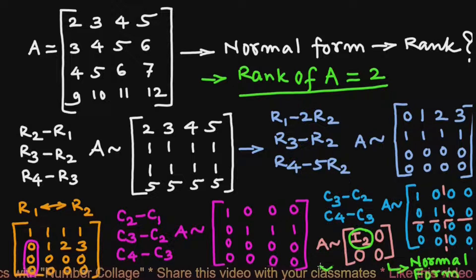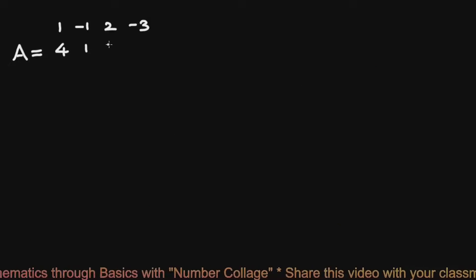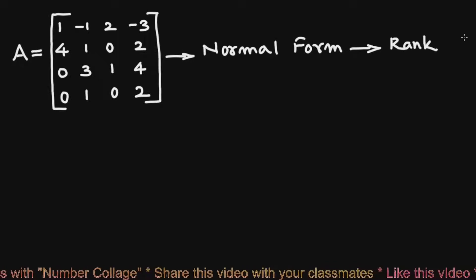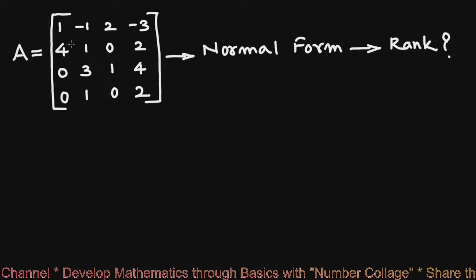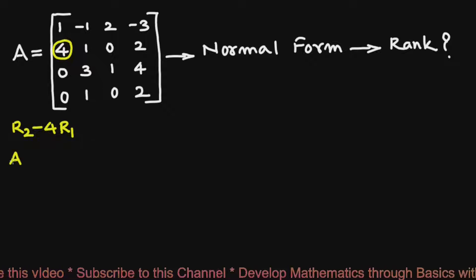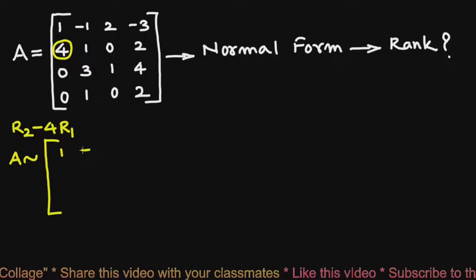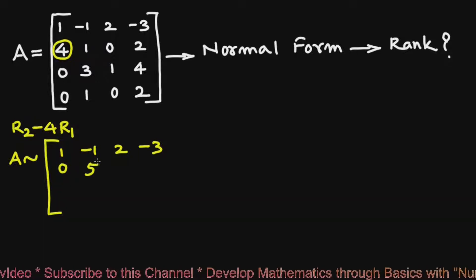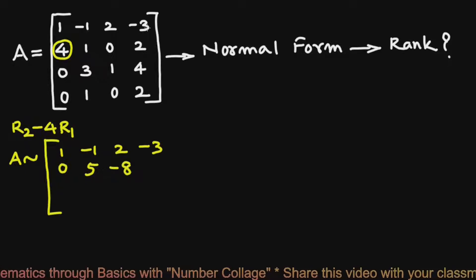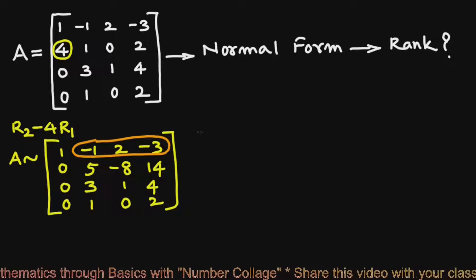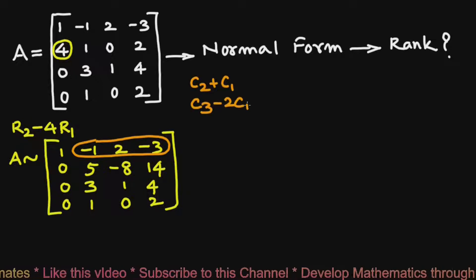We will reduce matrix A = [1,-1,2,-3; 4,1,0,2; 0,3,1,4; 0,1,0,2] to normal form and find its rank. By row transformation R2 minus 4R1, the equivalent matrix A is: first row [1,-1,2,-3], second row [0,5,-8,14], third and fourth rows remain [0,3,1,4] and [0,1,0,2]. Next, by column transformations C2+C1, C3-2C1, C4+3C1, we eliminate the -1, 2, -3 in row 1.